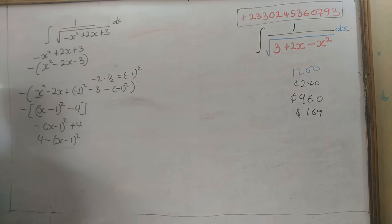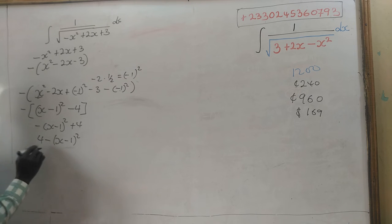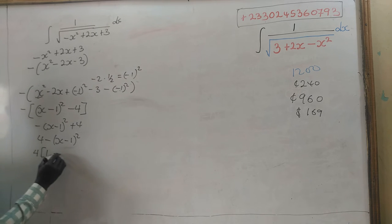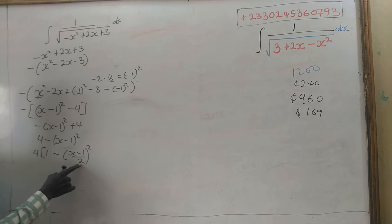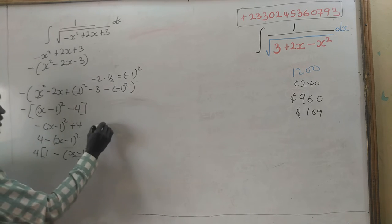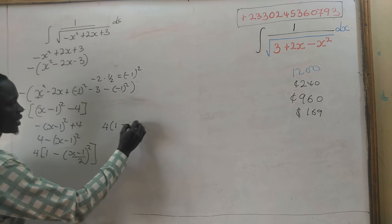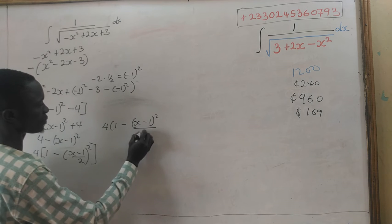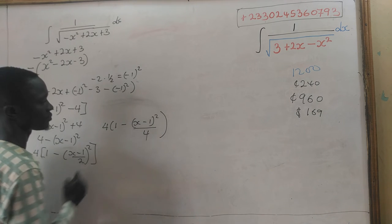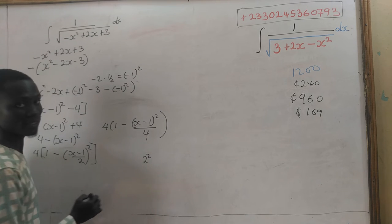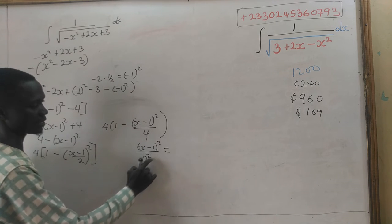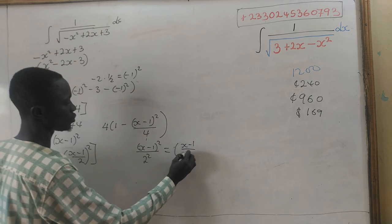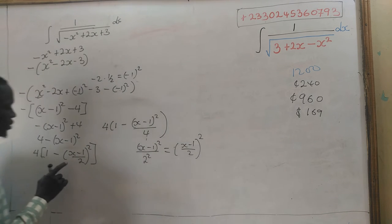We can factorize this further by factoring the 4 out, giving 4 times 1 minus (x minus 1) divided by 2, all squared. This is because 4 equals 2 squared, so we can divide inside by 4 and take the square root outside, giving (x minus 1) on 2, all squared — that is why we write it this way.